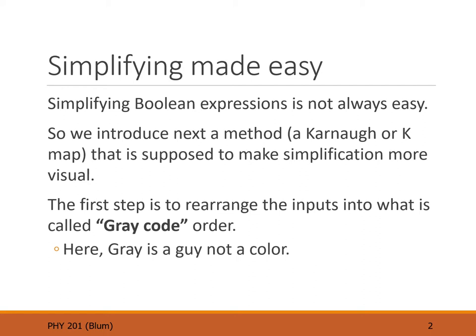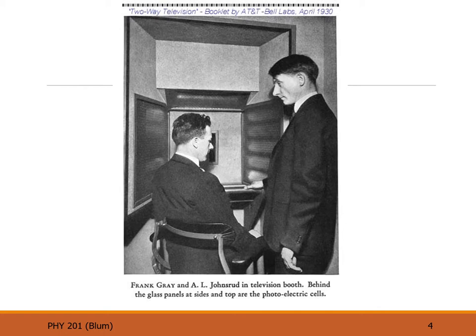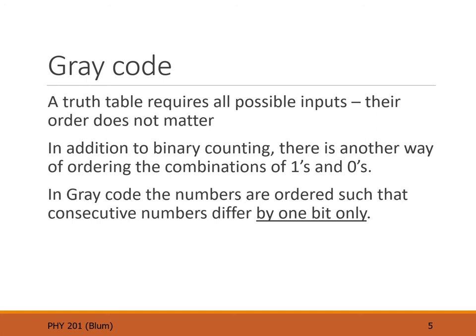We are going to introduce a method called the Karnaugh map to make this simplification visual. The first step is to rearrange the inputs in what's called gray code order. Here, gray is not a color — gray is a person, Frank Gray, a researcher from Bell Labs. Here's a picture of Frank Gray investigating an early version of television.